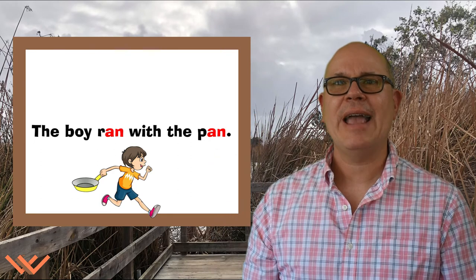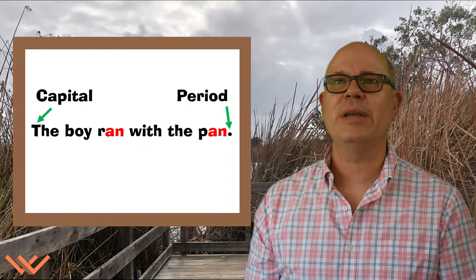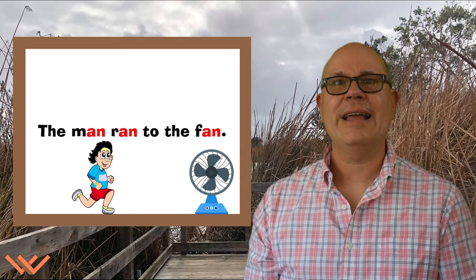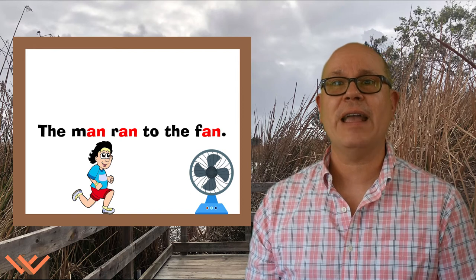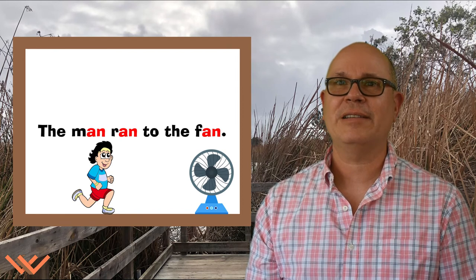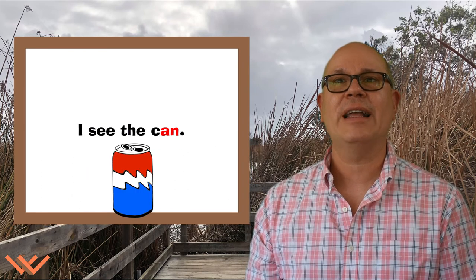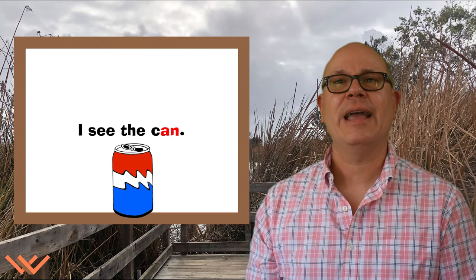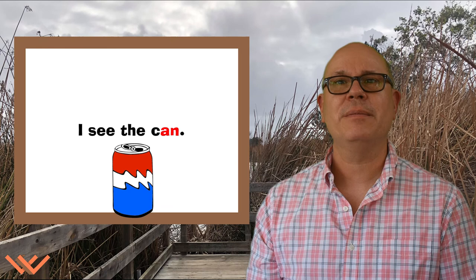Two. And remember that the sentence begins with a capital and ends with a period. Next sentence: the man ran. And we can extend that sentence as well to: the man ran to the van. Finally, our last sentence — it's a short one but it's another reminder: I see the can. There's one Ann word family word — can — and it starts with a capital letter and ends with a period.